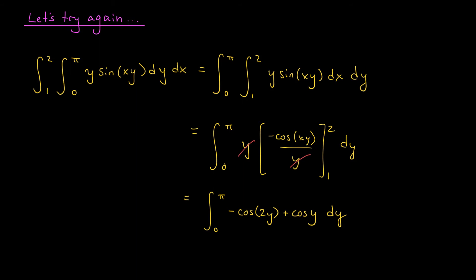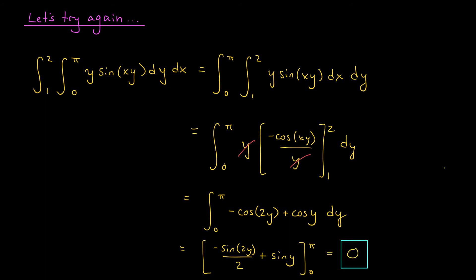Much simpler — no integration by parts needed. Anti-differentiating one more time gives minus sine(2y) over 2 plus sine(y), evaluated from 0 to pi. Substituting these bounds, everything disappears: sine(0), sine(pi), and sine(2pi) are all zero. So our final answer is zero. The moral of the story is that it's always important to keep in mind the order of integration. Sometimes a simple switch of the order — which is always valid when integrating over a rectangle — can make your life a whole lot easier.